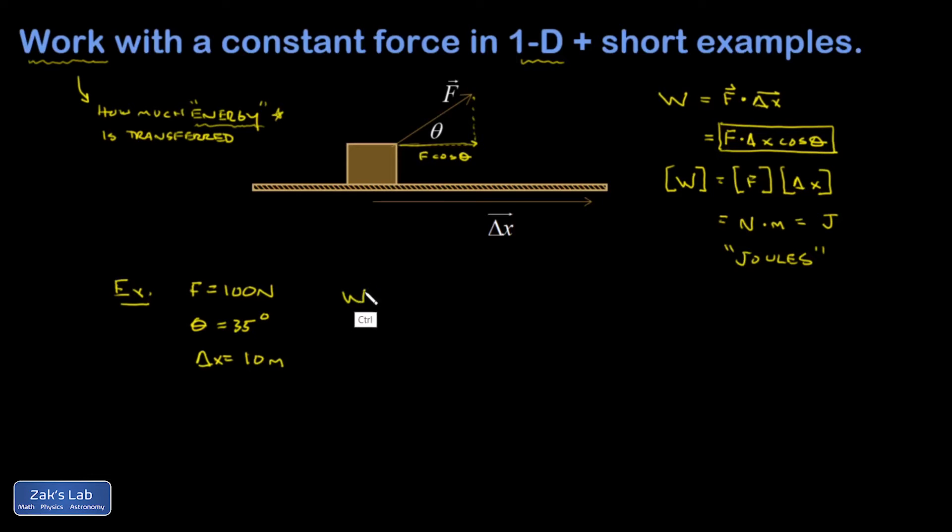I'm going to work down here. It would be F delta x cosine theta, where theta is the angle between the force vector and the displacement vector. I get 100 newtons multiplied by that 10 meter displacement times cosine 35 degrees, which tells me how much energy was pumped into the block during this process. I get 819 joules if I keep three sig figs.